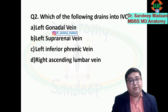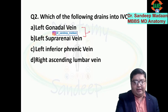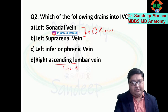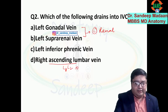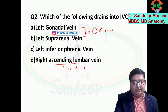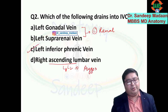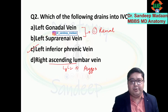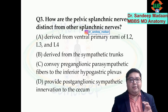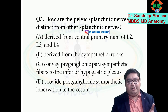Which of these will drain into the IVC? The left gonadal and left suprarenal drain into the left renal vein. The right ascending lumbar veins — L1 and L2 — these venules together become the ascending lumbar vein, which drains into the azygos vein. Answer C is correct because both left and right inferior phrenic veins drain into the IVC.